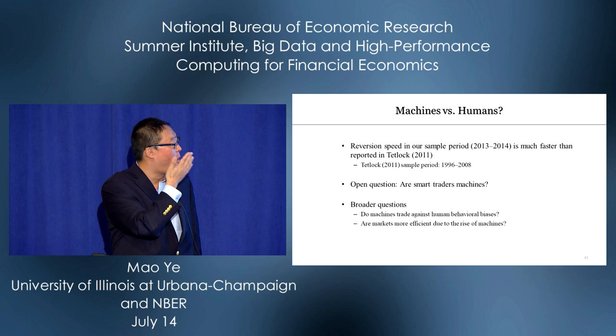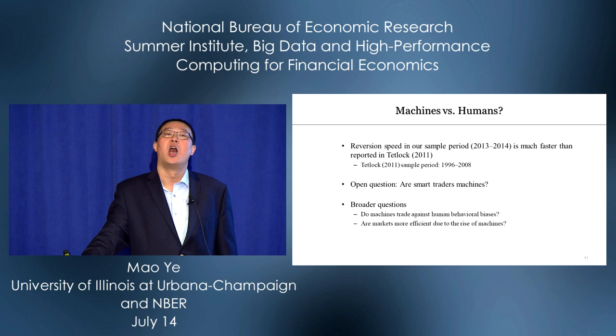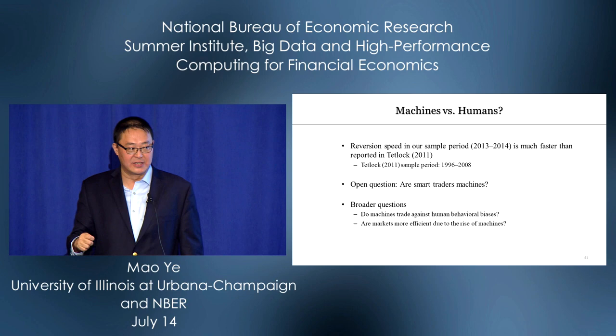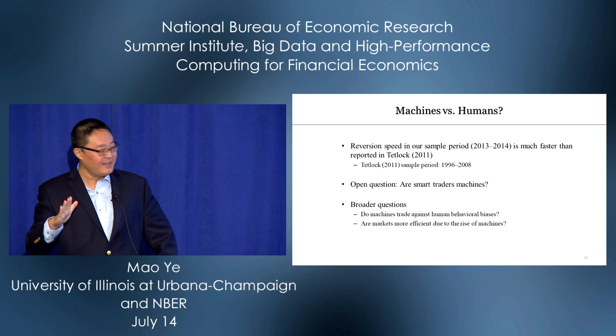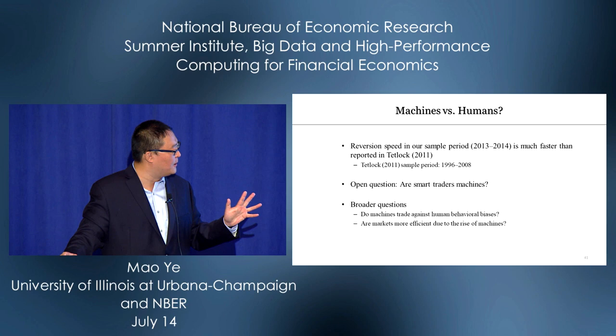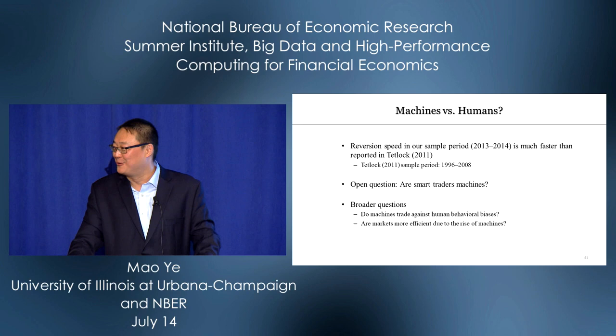Here's an open question: are these smart traders machines? We know lots of machines follow social media. Originally I thought they trade in the direction of sentiment — good news means buy. But since they are machines, they might do the opposite: trade against sentiment. That opens broader questions: do machines trade against human behavioral biases? If yes, do they intentionally do that, or do they follow certain decision rules without even knowing they're doing it? And are markets more efficient due to the rise of machines?